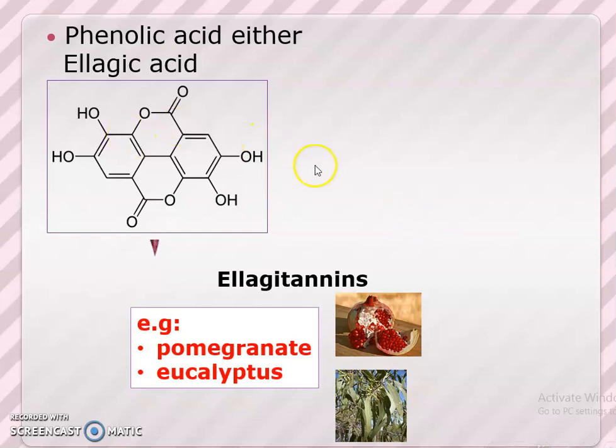Ellagic acid-based tannins are also known as ellagic tannins. Examples of drugs containing ellagic tannins include pomegranate rind and eucalyptus.